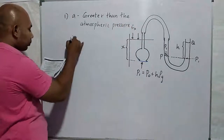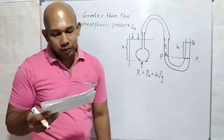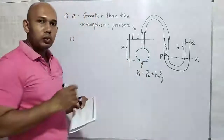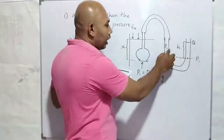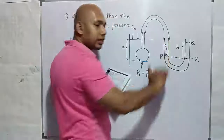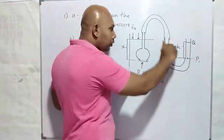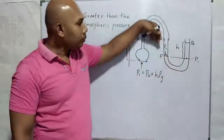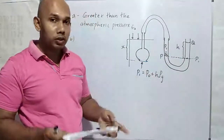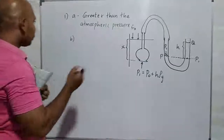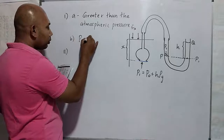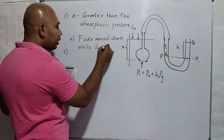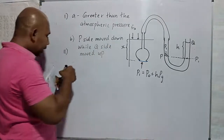Part B: State the observation that justifies the above conclusion. When the balloon membrane is exposed only to the atmospheric pressure, the liquid columns on the P side and Q side exist at the same level. But when the funnel is dipped, you can identify that the P side moves down and the Q side moves up. The reason is that pressure at the P side is greater than at the Q side, so the P side moves down while the Q side liquid level goes up. That is the answer.